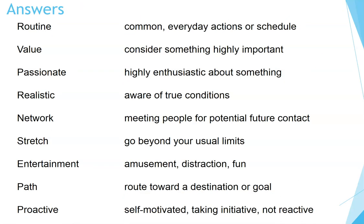Answers: Routine — common, everyday actions or schedule. Value — consider something highly important. Passionate — highly enthusiastic about something. Realistic — aware of true conditions. Network — meeting people for potential future contact. Stretch — go beyond your usual limits. Entertainment — amusement, distraction, fun. Path — route toward a destination or goal. Proactive — self-motivated, taking initiative, not reactive.